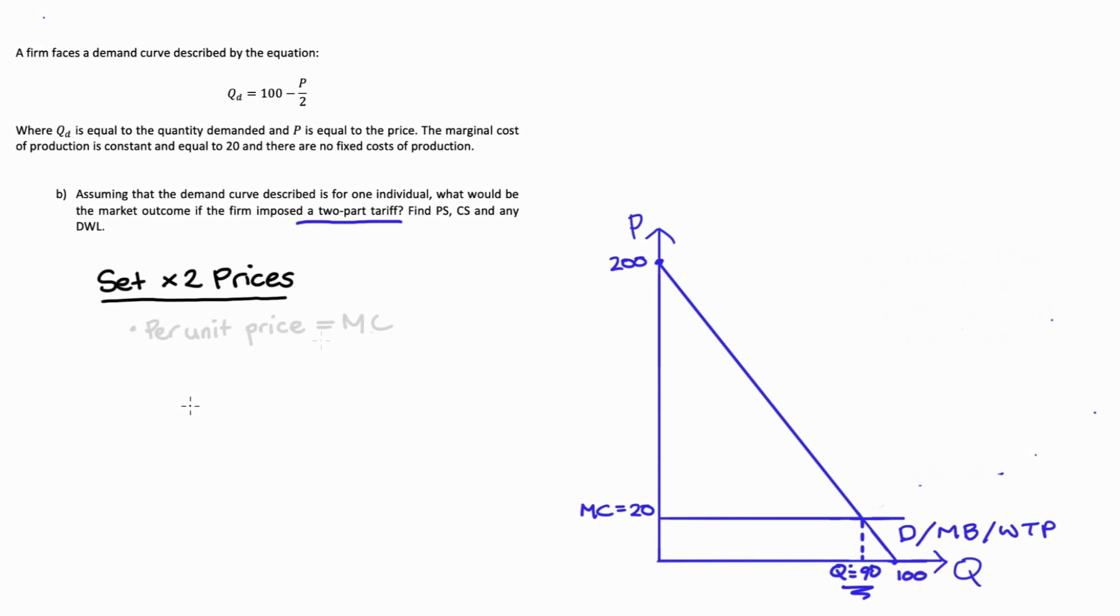The first price is a per unit price equal to marginal cost. So in our question, our firm sells 90 units (we found that quantity before where marginal benefit equals marginal cost), and we sell each of these units for marginal cost, which is 20. So 90 units at $20 each.